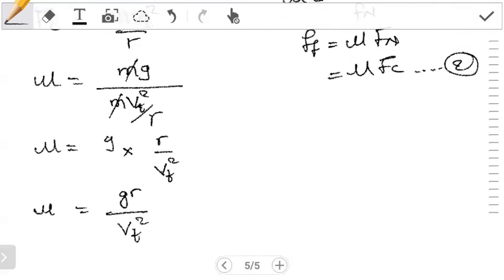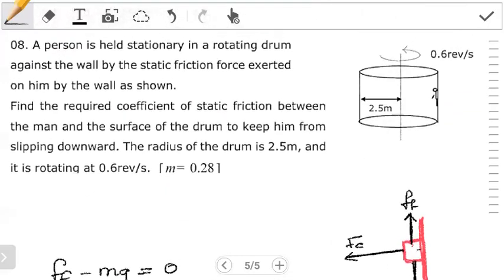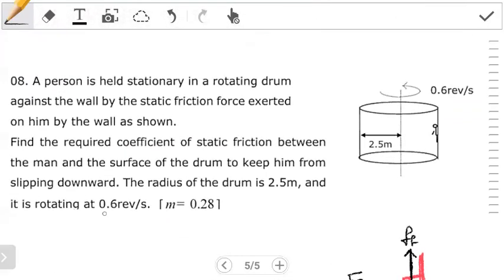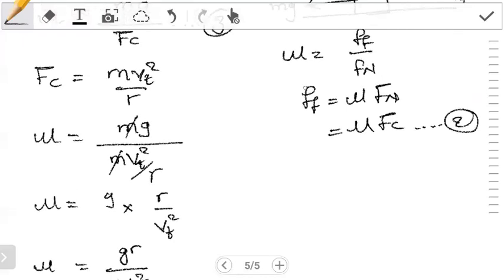Okay, so now we have our expression for mu. The remaining thing is just to substitute. But what is our question giving us? So if we go back to our question to see what we're given, so we're given the angular velocity.